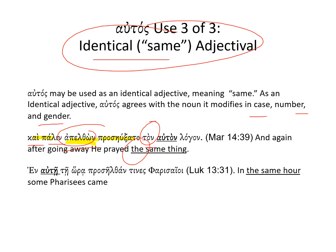Here αὐτή follows the preposition ἐν, which often can — but does not need to — have the definite article, so there's a bit of ambiguity. But you can see in the English translation: προσελθόντες — some of the Pharisees came — 'in that hour,' 'in the same hour.' The phrase τῇ ὥρᾳ by itself could be 'in the hour,' but this use of αὐτῇ is an identical use — a repetitive use — 'in the same hour.'